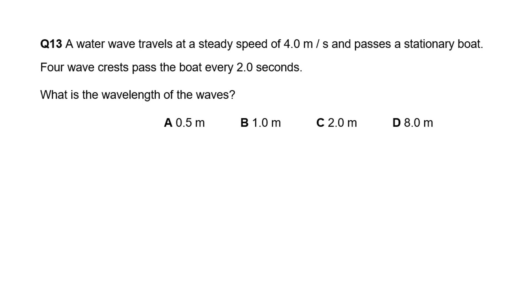A water wave travels at a steady speed of four meters per second and passes a stationary boat. Four wave crests pass the boat every two seconds. What is the wavelength? First, figure out the frequency. We get four crests in two seconds, so the frequency is two hertz—two wave crests in one second. We can use the wave equation. We've got the frequency, we've got the speed, so we can get the wavelength.